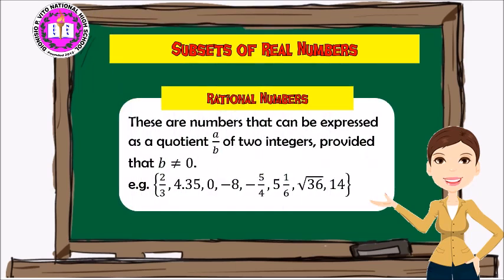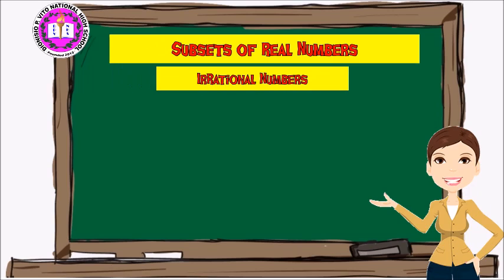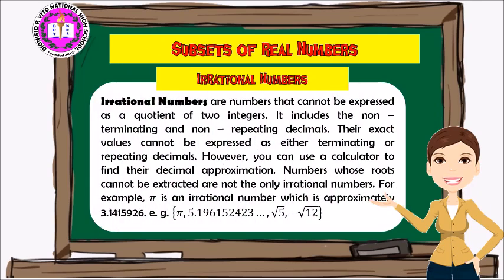The next subset is rational numbers. These are numbers that can be expressed as a quotient a over b of two integers, provided that b is not equal to zero. For example: two-thirds, four, 0.35, zero, negative eight, negative five-fourths, five and one-sixth, the square root of 36, and positive 14.